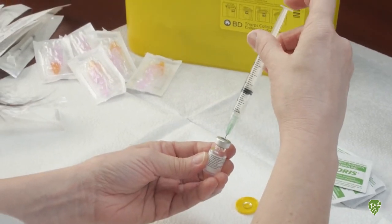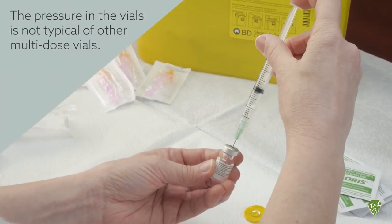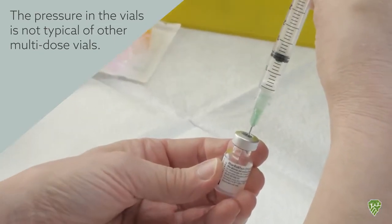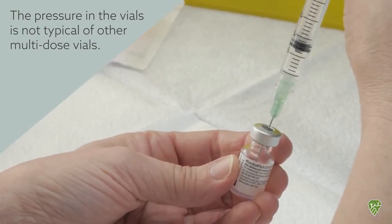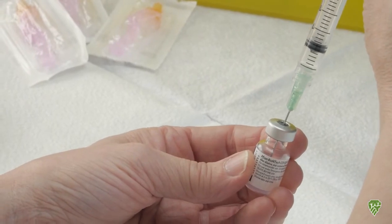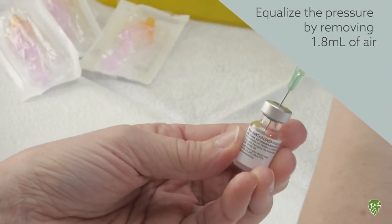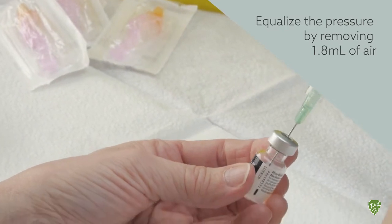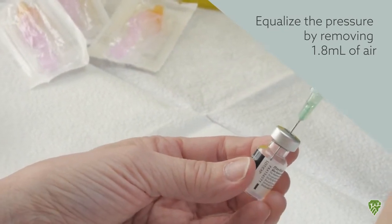And sometimes letting some of that air come back into the syringe helps to get all of the diluent in so that there's none left in the syringe at all. And then we just equalize the pressure by removing that 1.8 milliliters of air.